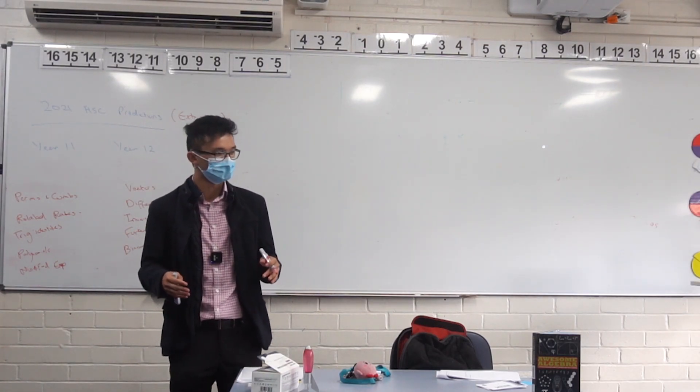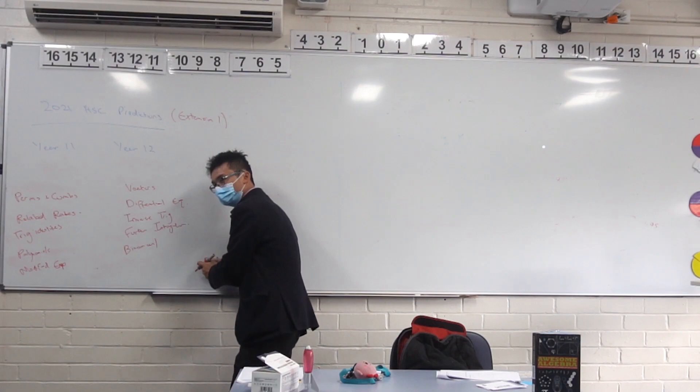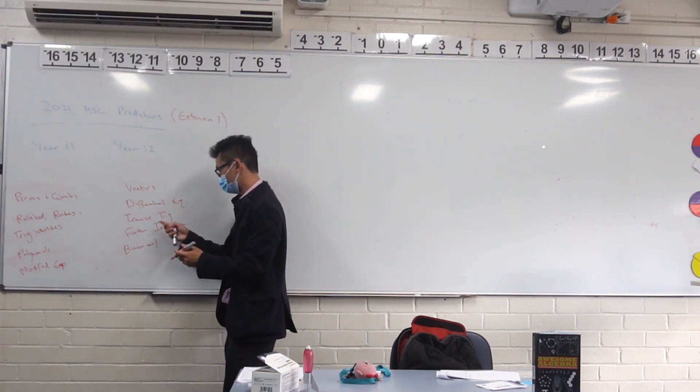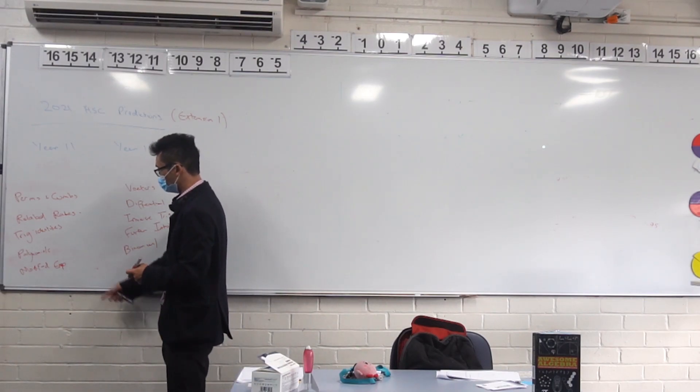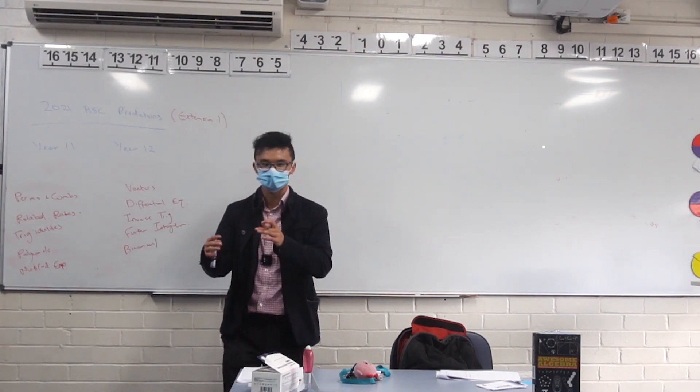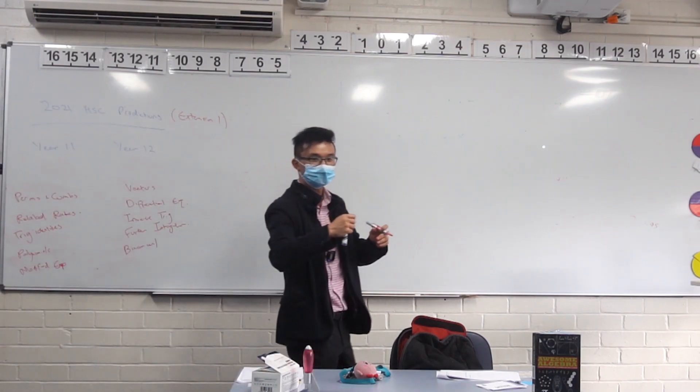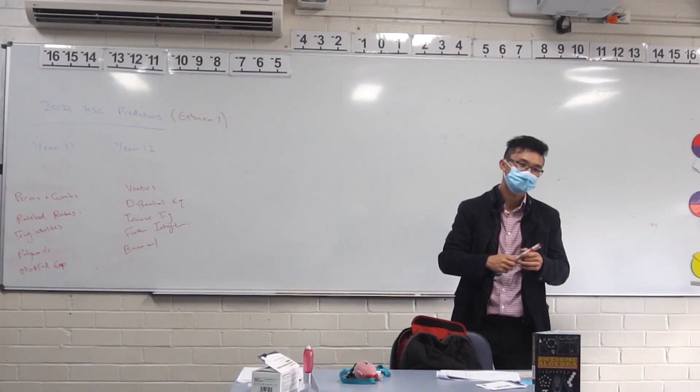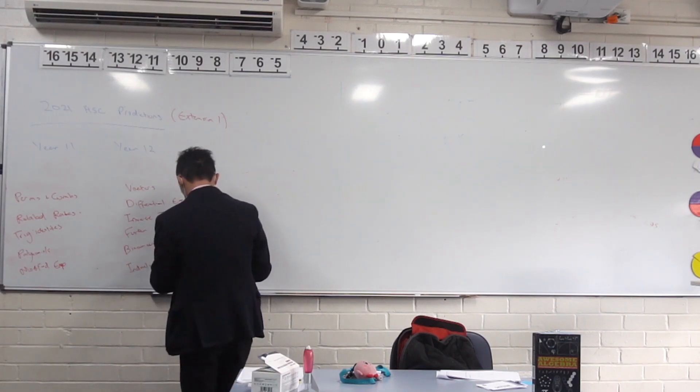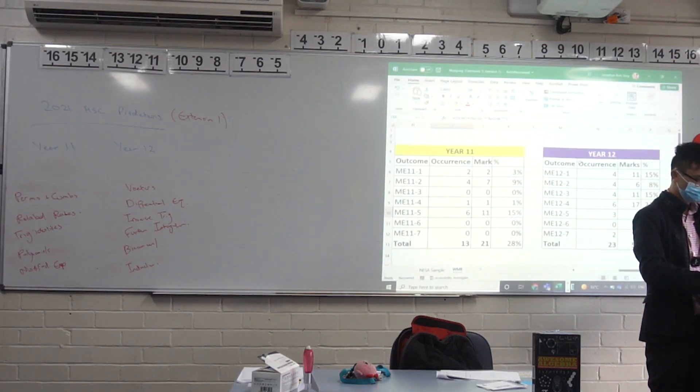So when you think about the weighting of Year 11, no matter what the percentage, this is stuff you might not have done for a while compared to this stuff over here, because they're not necessarily assumed knowledge. There are some exceptions like trig identities you do use in some of the integration and inverse trig stuff, but for the most part, perms and combs, rate of rates, polynomials, modified exponential growth, these are kind of like standalone topics that you guys might need to think about refreshing yourselves on. Right, you want to say something? I was just going to say, was it mathematical induction? Oh yeah, again another standalone topic. So induction, that's a good one. So let's go and have a look at our distribution over here, so Year 11 to Year 12.